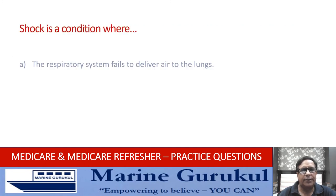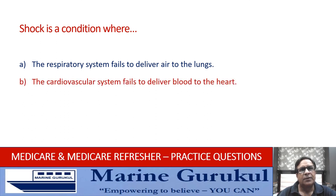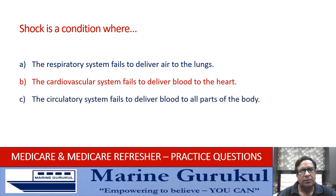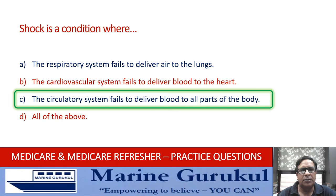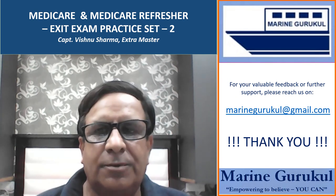Shock is a condition where: the respiratory system fails to deliver air to the lungs; the cardiovascular system fails to deliver blood to the heart; the circulatory system fails to deliver blood to all parts of the body; or all of the above. The answer is C — it's the failure of the circulatory system to deliver blood to all parts of the body that leads to a condition of shock.